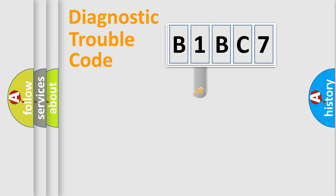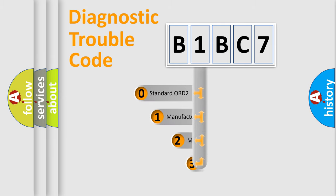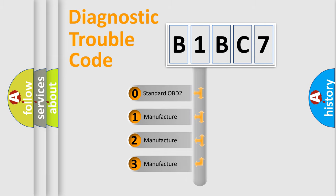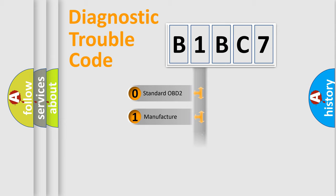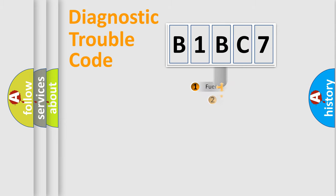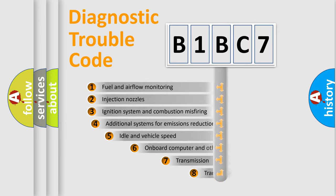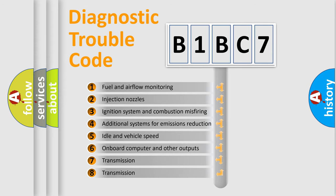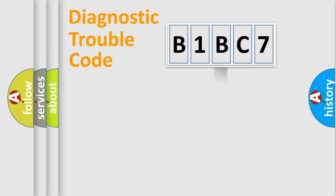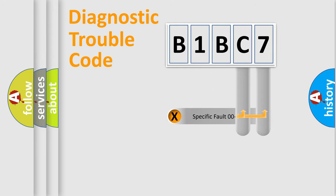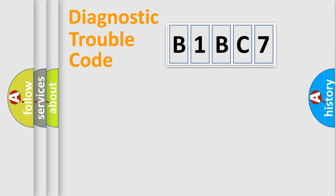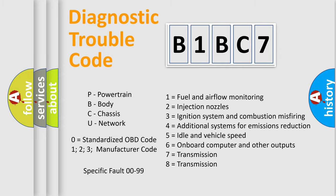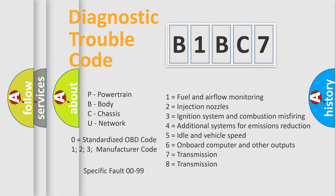This distribution is defined in the first character of the code. If the second character is expressed as zero, it is a standardized error. In the case of numbers 1, 2, or 3, it is a manufacturer-specific error. The third character specifies a subset of errors. This distribution is valid only for the standardized DTC code. Only the last two characters define the specific fault of the group, and this division is valid only if the second character is zero.